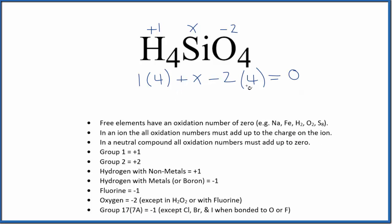So we have four here. Negative two times four is eight. Four and negative eight gives us X minus four equals zero. We add four to both sides, so X equals positive four.